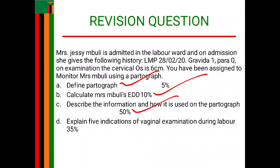The last question is talking about explaining 5 indications for vaginal examination during labor. Some of the indications for vaginal examination are: the first one is when membranes are ruptured. As soon as the membranes rupture, the vaginal examination will be carried out to rule out things like cord prolapse, the color of meconium, and other things. Then apart from that, you can also do a vaginal examination to make the diagnosis of labor — you want to determine how far the baby has moved in the pelvic brim and to rule out any abnormalities that may be present, and also to determine how far the cervical os has dilated.